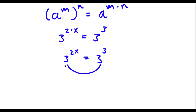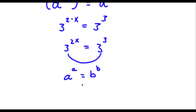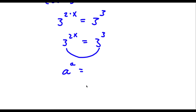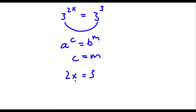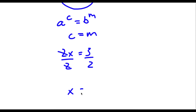Now if you notice, both of these have the same base — both bases are 3. If I have something in the form a to the power of c is equal to a to the power of m, this means that c is equal to m. So in this case, 2x is equal to 3. Now to solve this, simply divide both sides by 2. These two cancel out and I'm left with x is equal to 3 over 2.